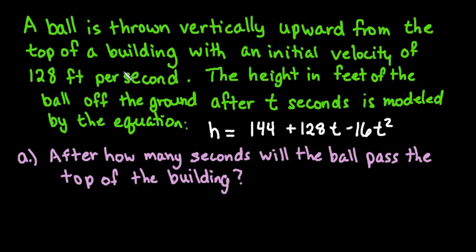For this problem we're going to look at a quadratic word problem. A ball is thrown vertically upward from the top of a building with an initial velocity of 128 feet per second. The height in feet of the ball off the ground after t seconds is modeled by the equation h equals 144 plus 128t minus 16t squared, where h represents the height in feet of the ball off the ground after a set amount of time t.